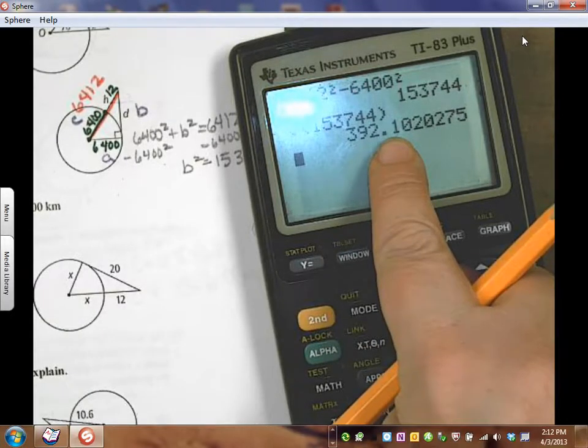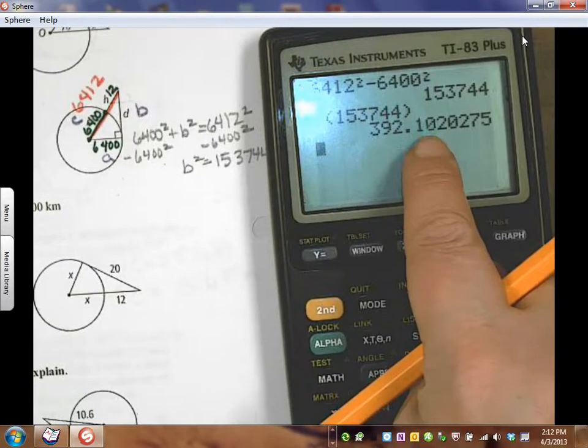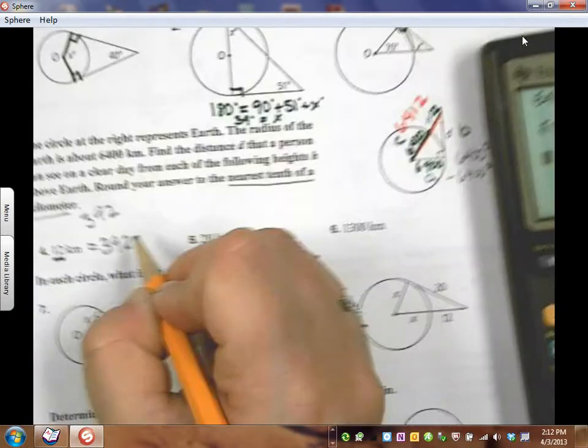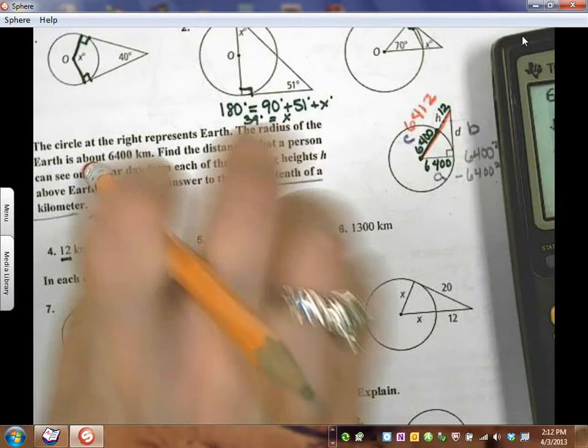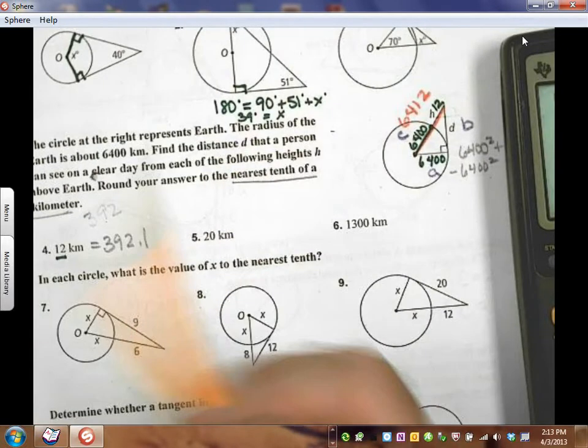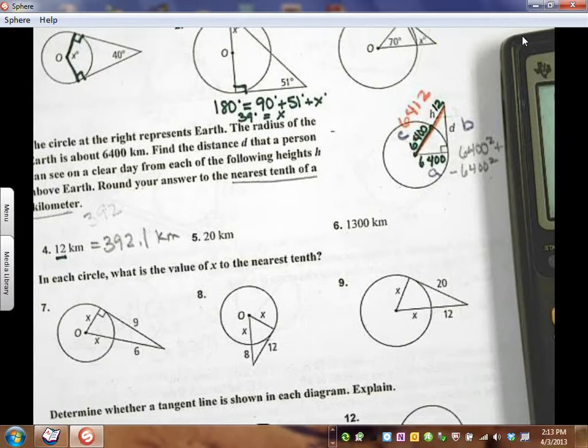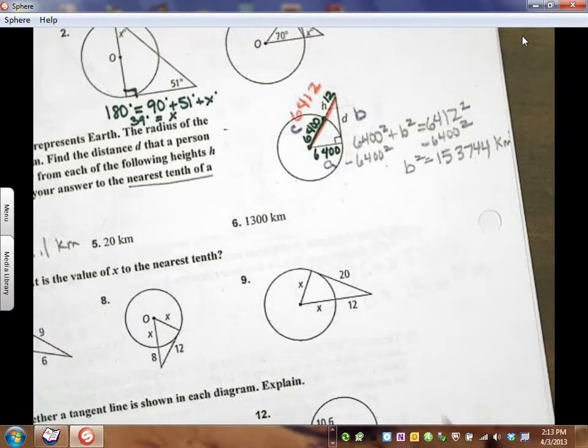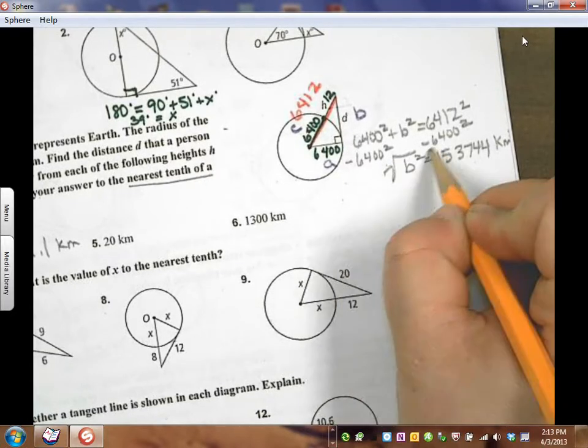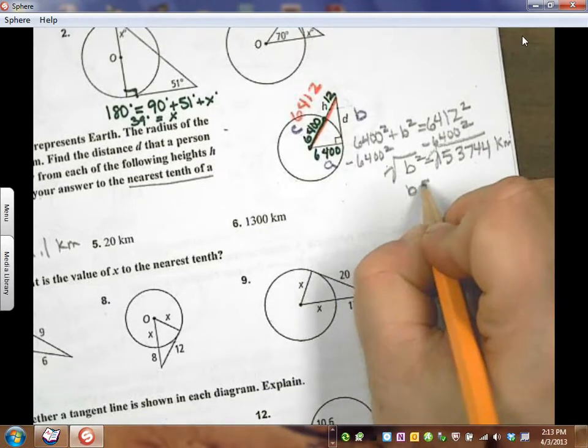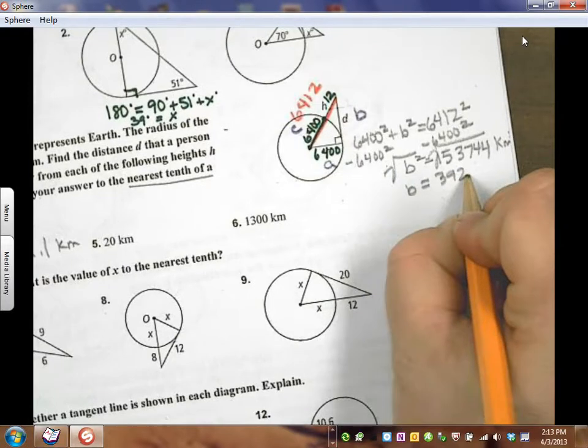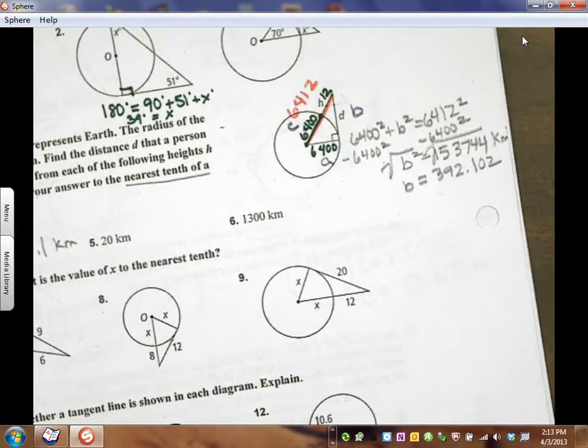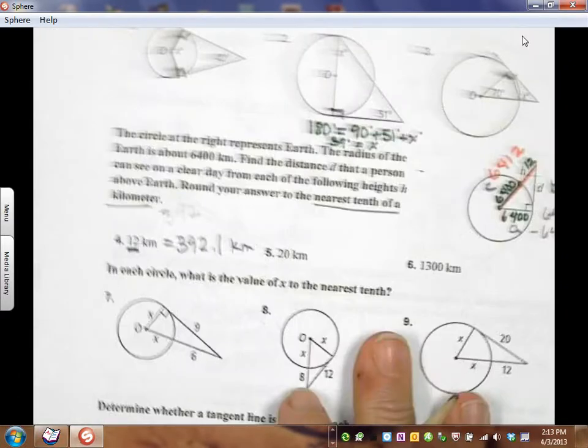It wants us to round it to the nearest tenth of a kilometer. So the tenth would be this one. And just to the right, I've got a zero. So it's going to be equal to 392.1 kilometers is how far I can see. You're going to do the same kind of thing over here.